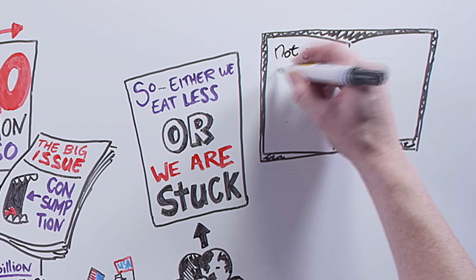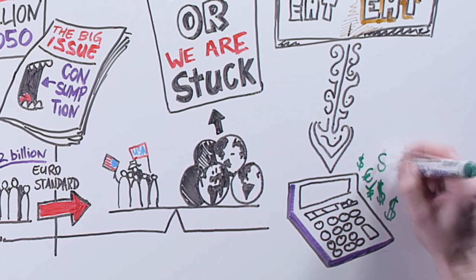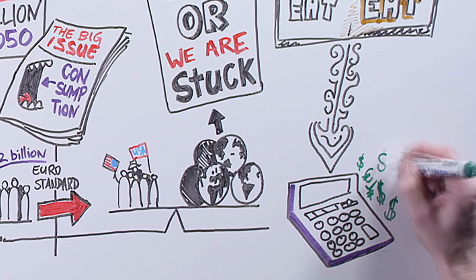And it's not just how much people eat, but what they eat. We all know, or at least we do as economists know, that the first habit to change when people get rich is their diet.